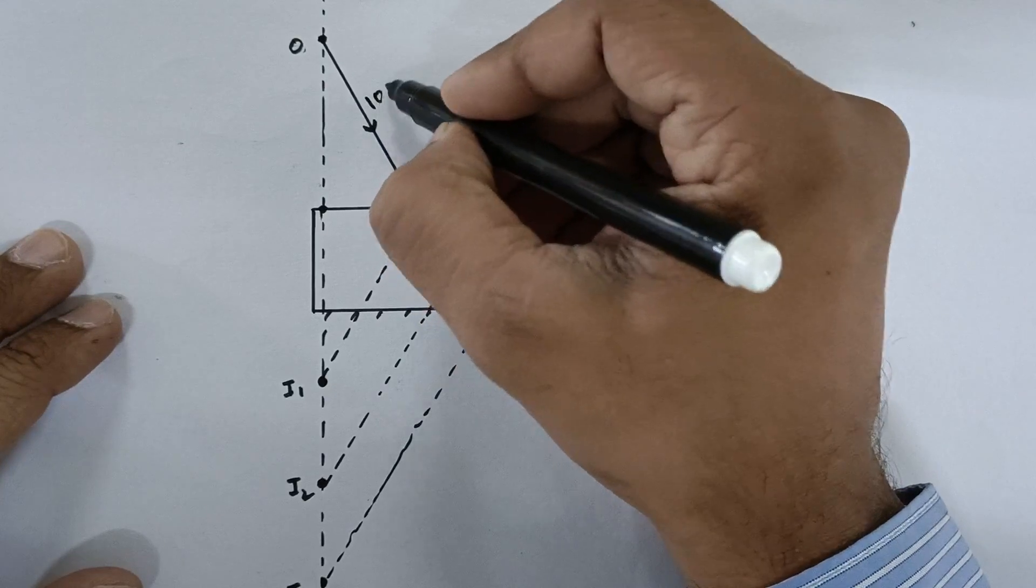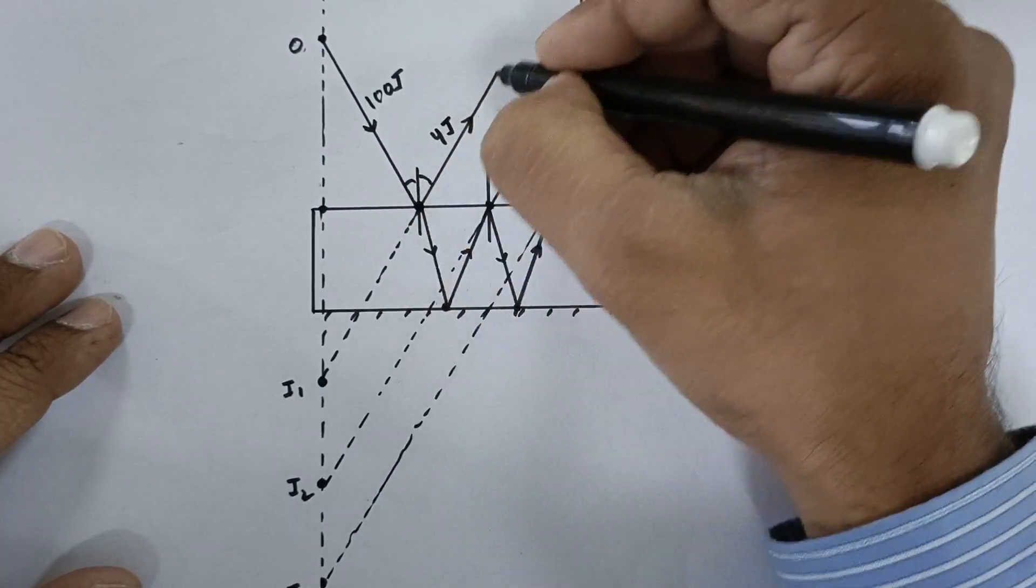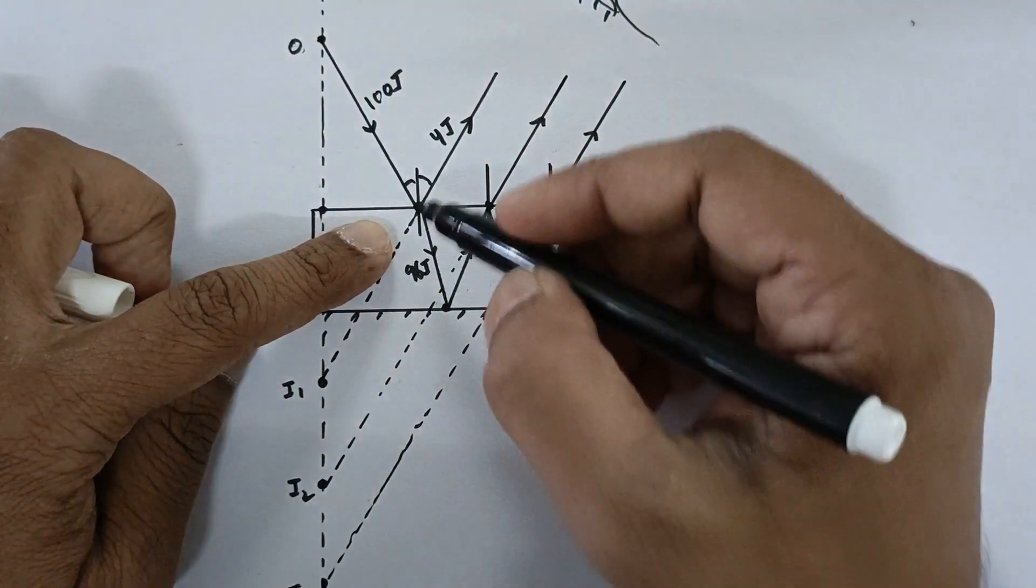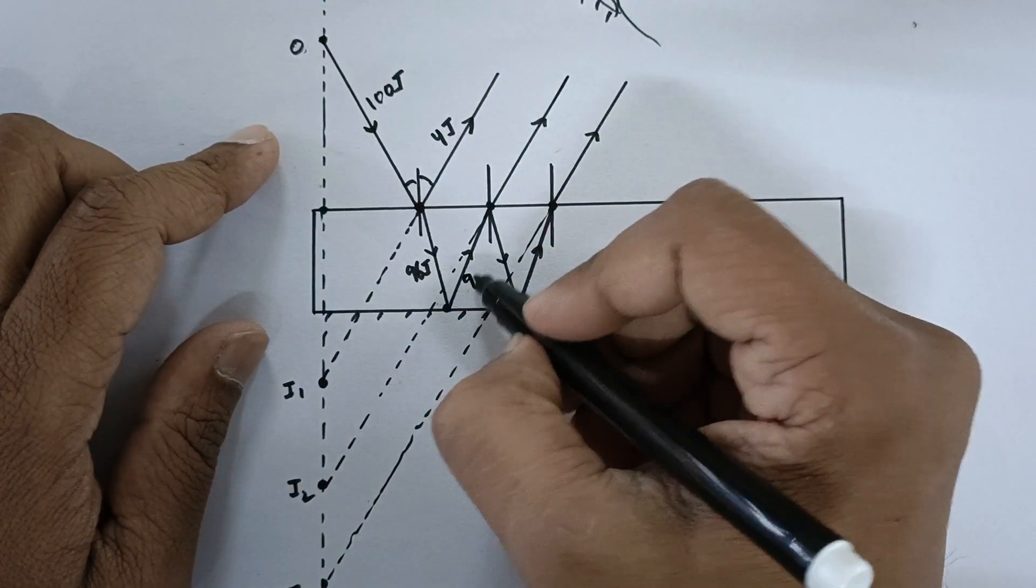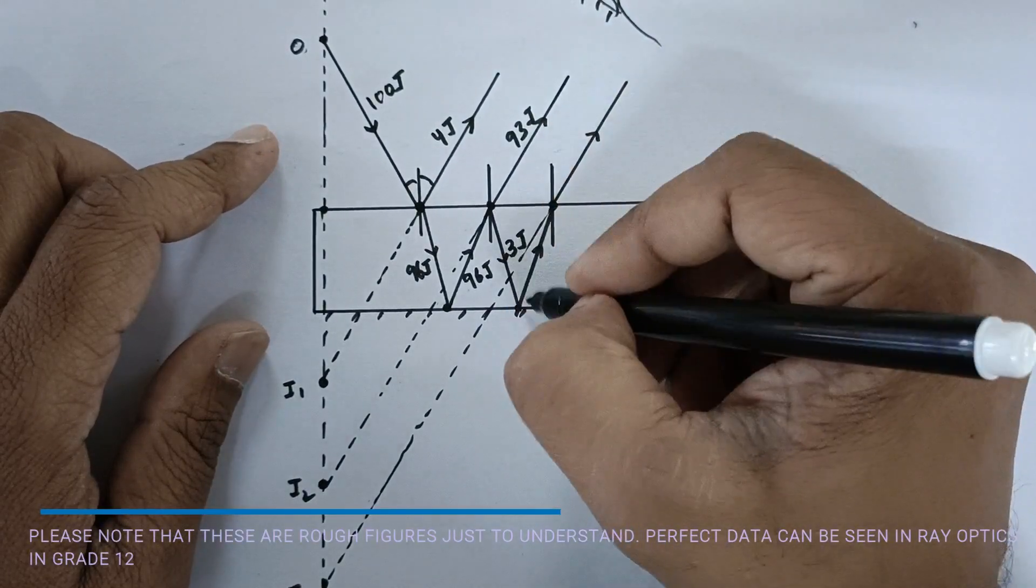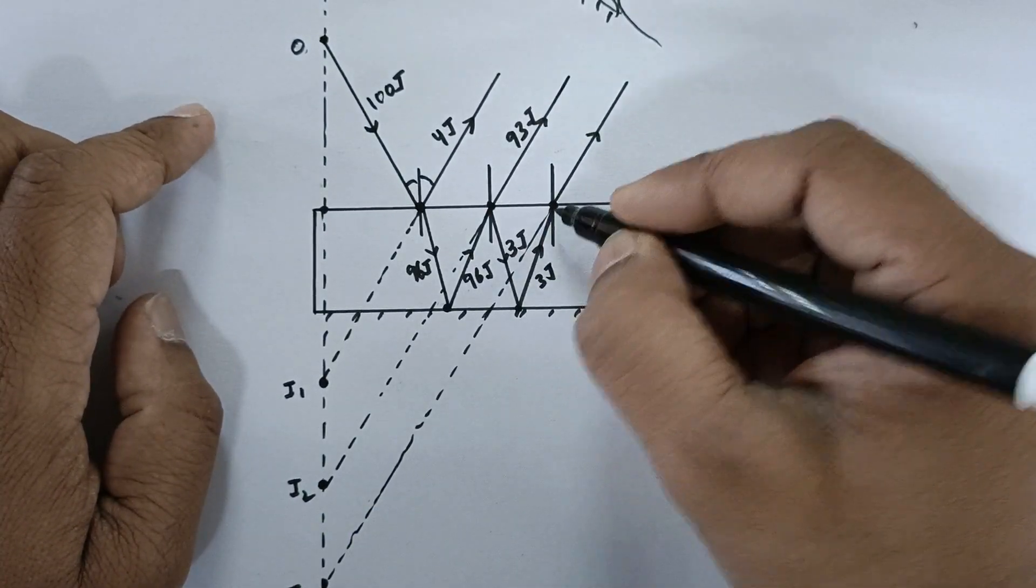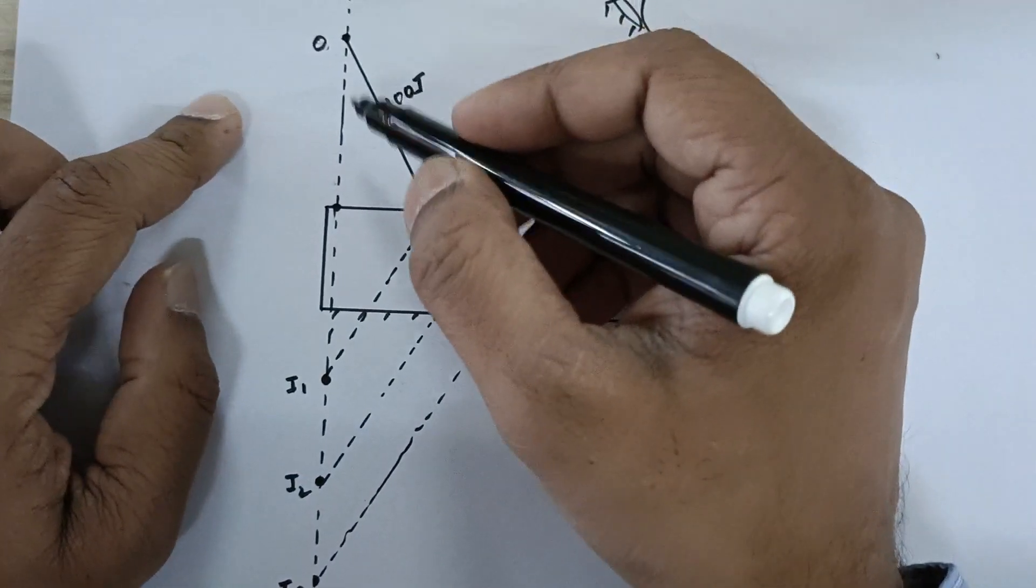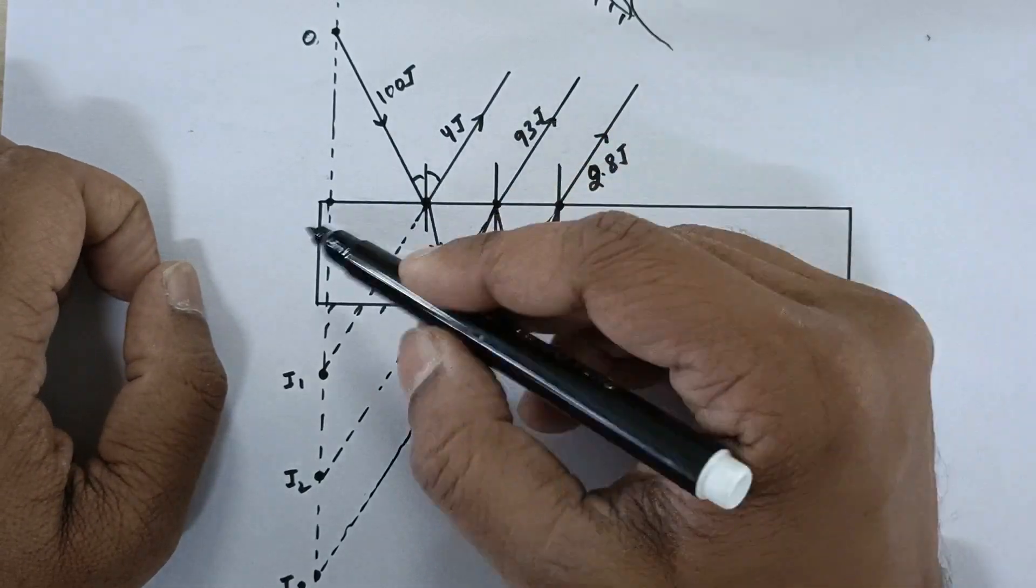Now if I consider this light ray to be having 100 joules of energy, then about 4 percent gets partially reflected. So about 4 joules of energy goes over here and about 96 joules of energy goes into the refraction. Again from here there is no possibility for the light to escape out because this is silvered part. So this is again 96 joules. Out of that about 93 joules goes out and about 3 joules goes into the partial reflection part. It is a ratio of about 96 percent goes inside for air-glass interface and about 4 percent gets reflected from the surface.